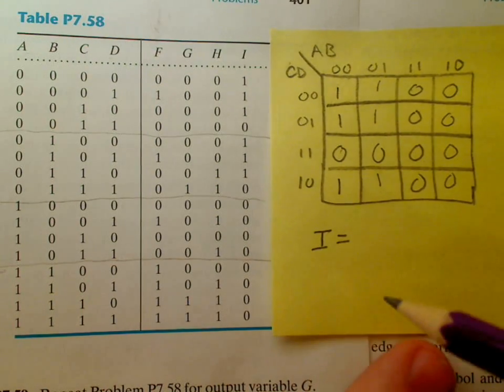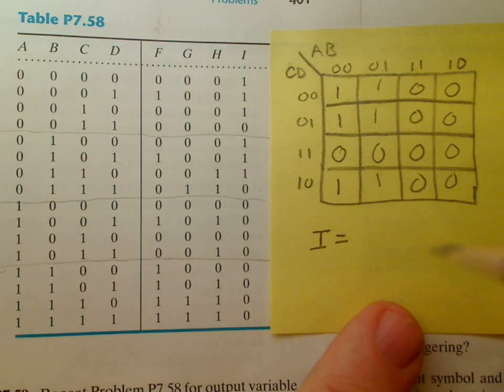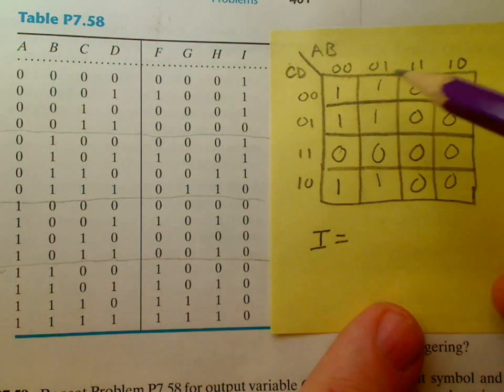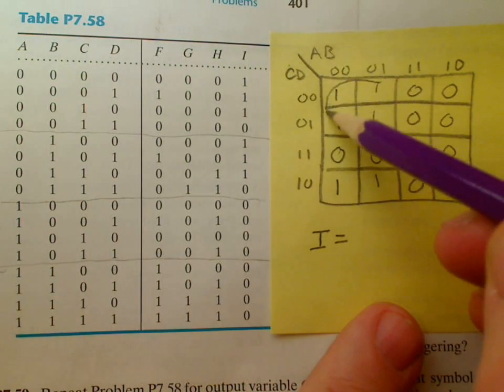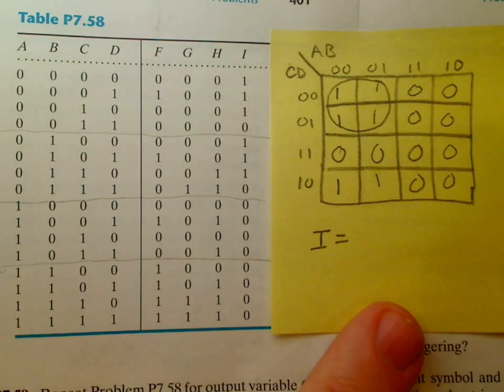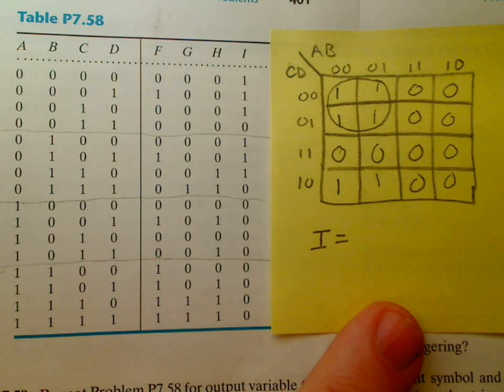So if I'm trying to find an equation that corresponds to the minimum circuit here, I want to circle a large group of 1s. So there's the largest group of 1s I can do as part of the Karnaugh map process, groups of 2, 4, 8, and so forth.